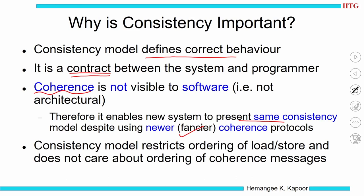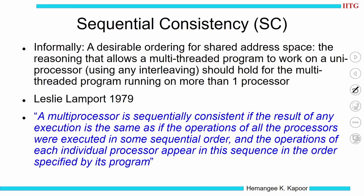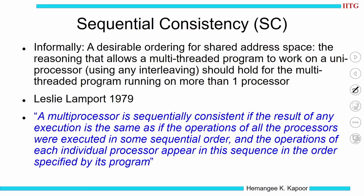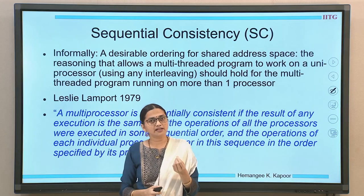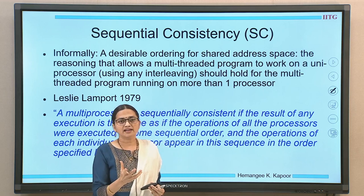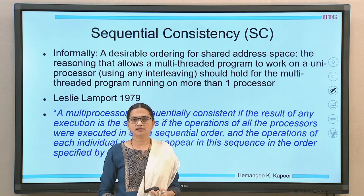So I can have newer coherence protocols using the same consistency model. The consistency model only restricts the ordering of loads and stores — it tells us what the order of load and store messages will be across same and different locations, and does not care about the ordering given by coherence. Memory consistency comes in various flavors. The fundamental one is called sequential consistency, which is the main foundation for understanding all memory consistency models.